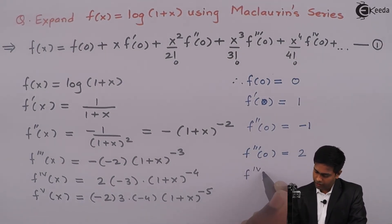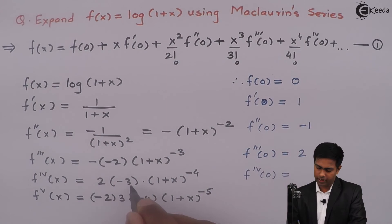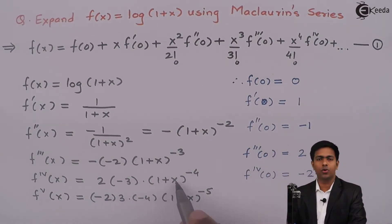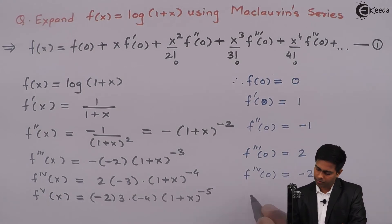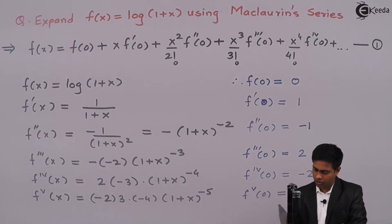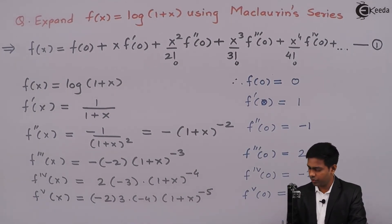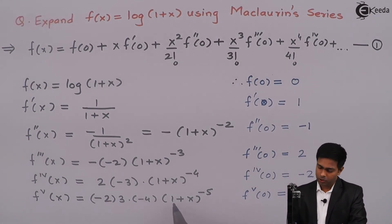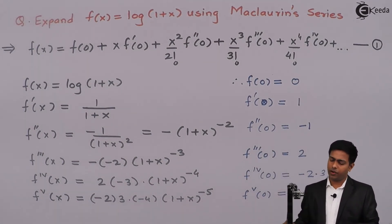f''''(0): we get −2·3 = −6, and (1+0)⁴ = 1, so f''''(0) = −6. f'''''(0): the signs give a positive result, and 2·3·4 = 24, with (1+0)^5 = 1, so f'''''(0) = 24. So those are all the values we need.